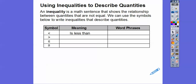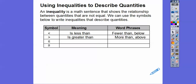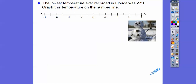This first one is a less than symbol, this is a greater than symbol. Less than or equal to means we're going to include the number, and this one would be greater than or equal to. So if you see 'less than,' you might see phrases like 'fewer than' or 'below.' Greater than would be 'more than' or 'above.' Less than or equal to is 'at most' or 'no more than,' and greater than or equal to is 'at least' or 'no less than.' We'll come back to those in just a second.